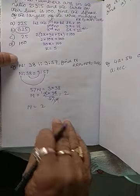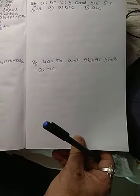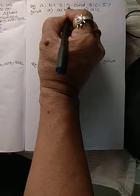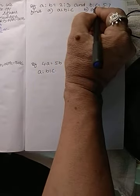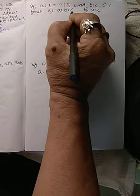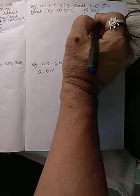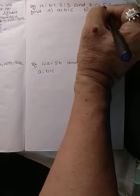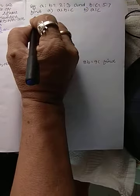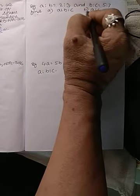So now let us see the next sum. If A:B = 2:3 and B:C = 5:7, find A:B:C and A:C.